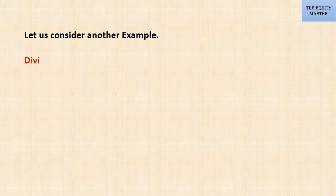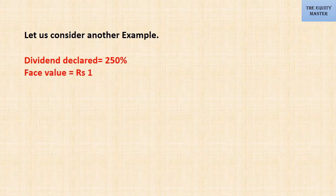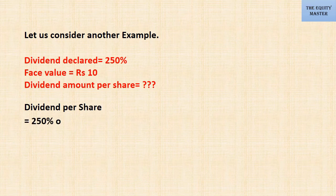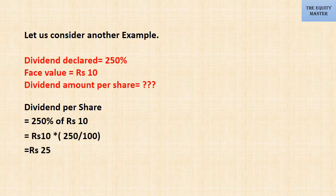Let us consider another example. Dividend declared by the company is 250% and the face value of the company is 10 rupees. Dividend per share equals 250% of 10, which is 25 rupees. Here we learn that when face value increases, dividend will decrease, and vice versa.